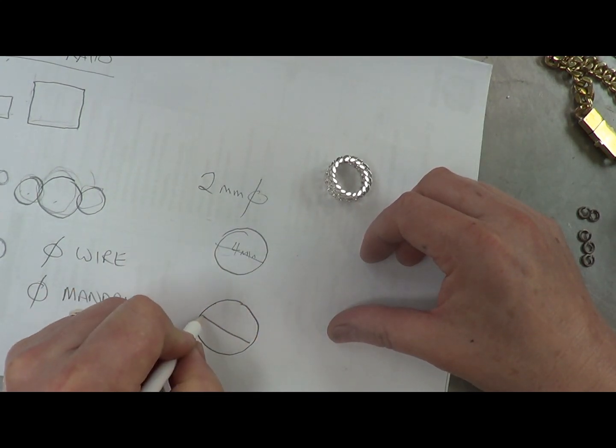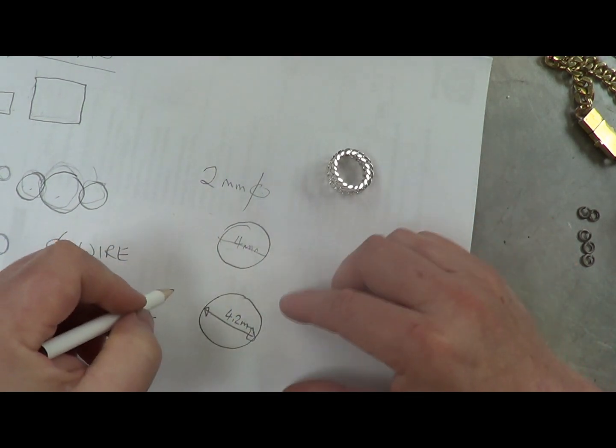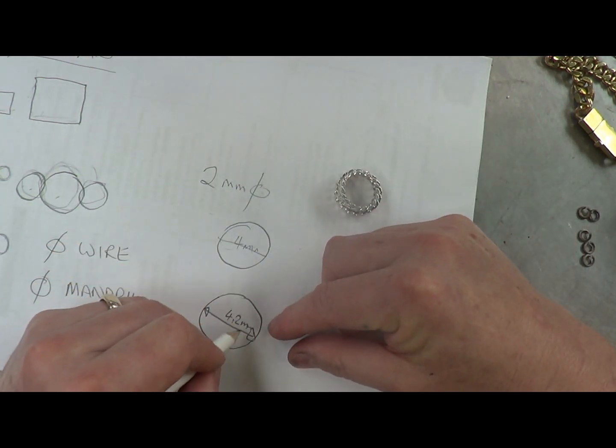I like to give myself just a fraction of wriggle room. So I'm actually using a mandrel that I've specially made up, which has a diameter of 4.2 millimetres. So my rule of thumb when I'm making these links for these chains here,